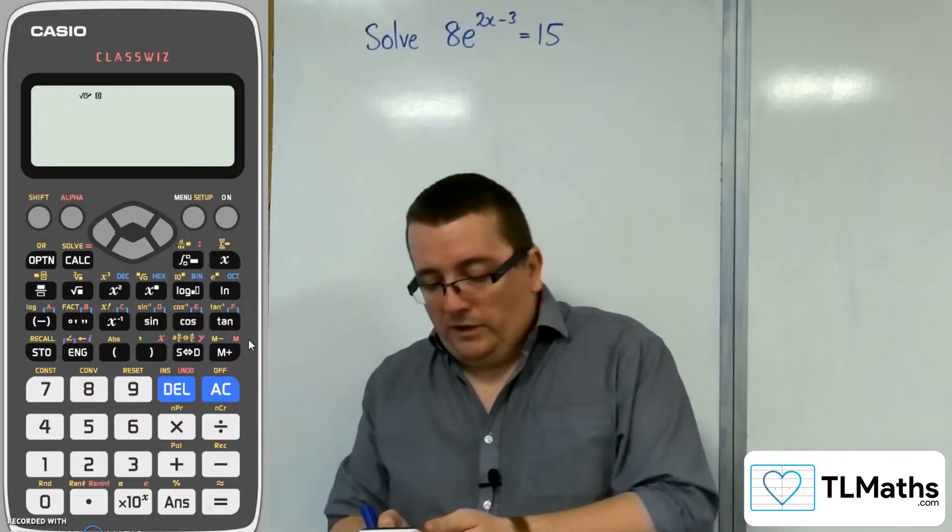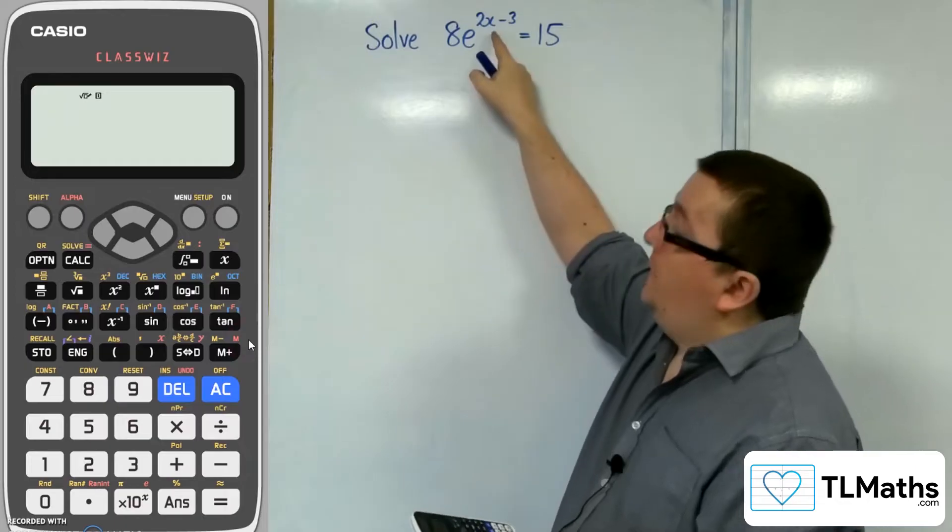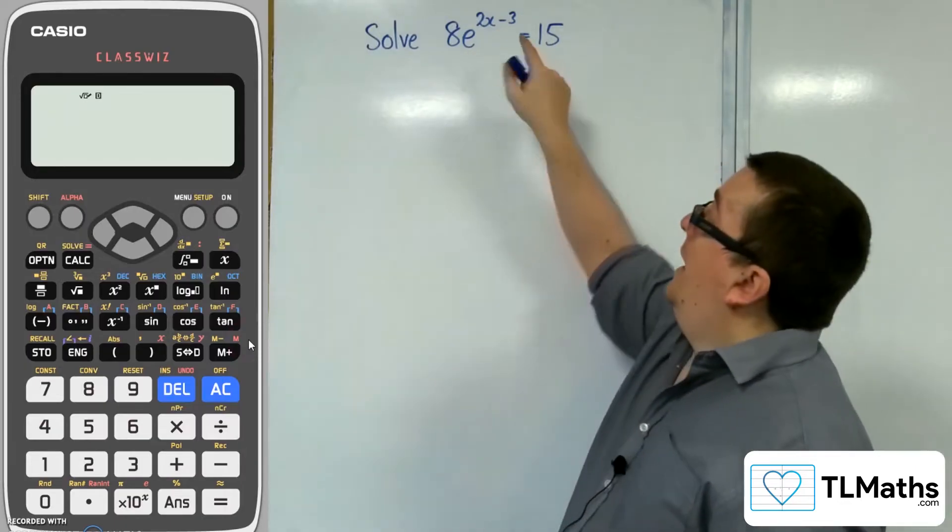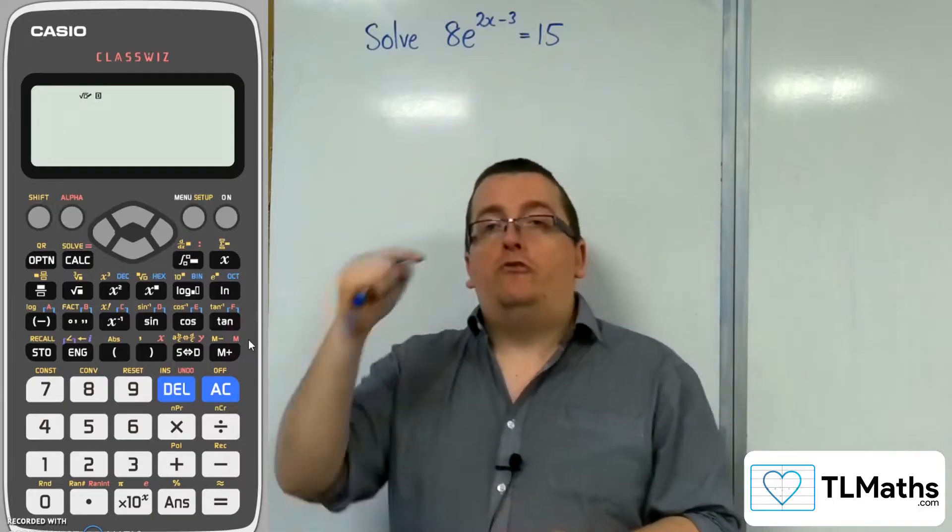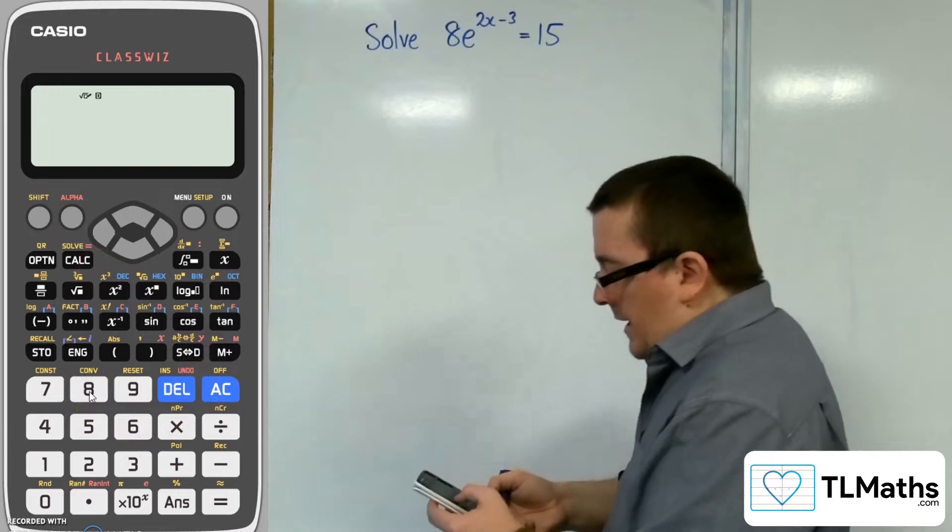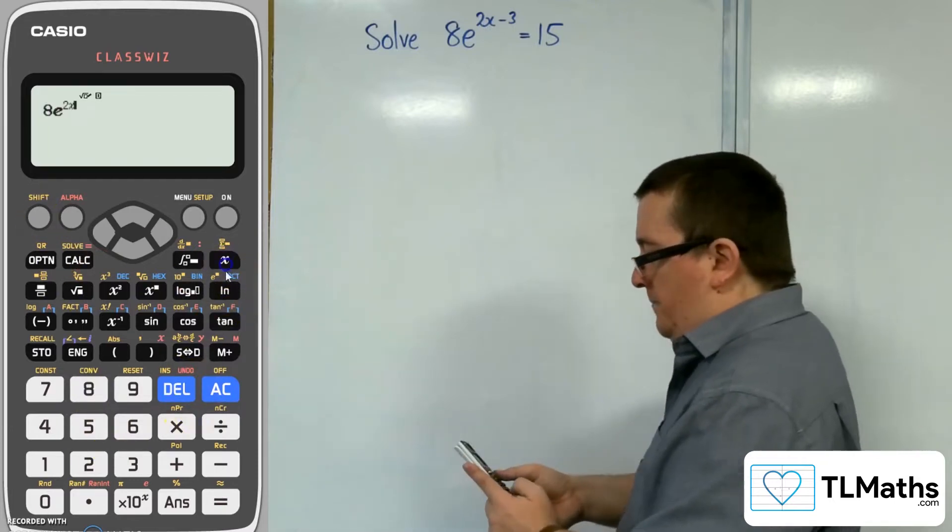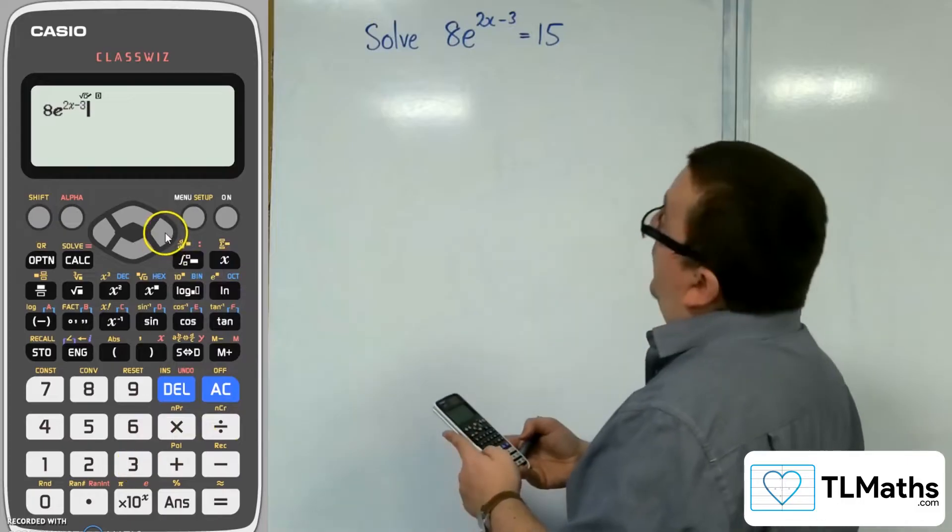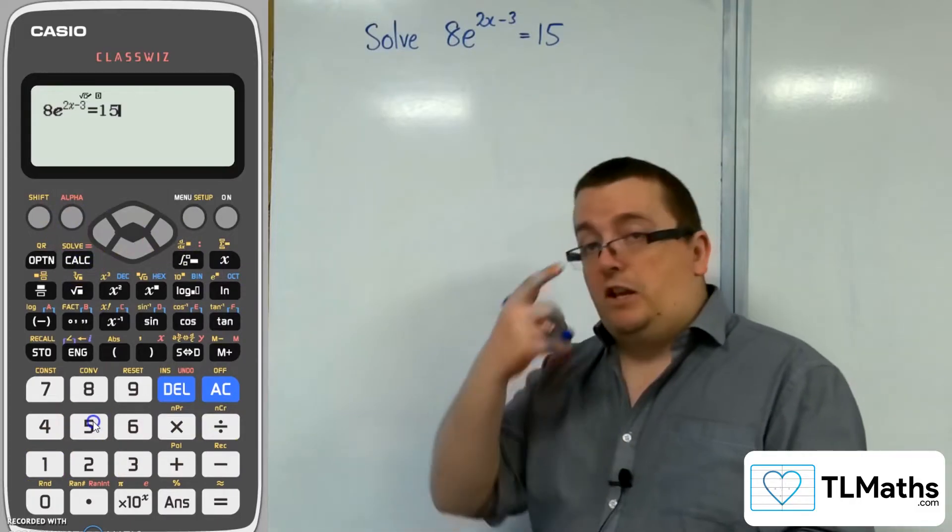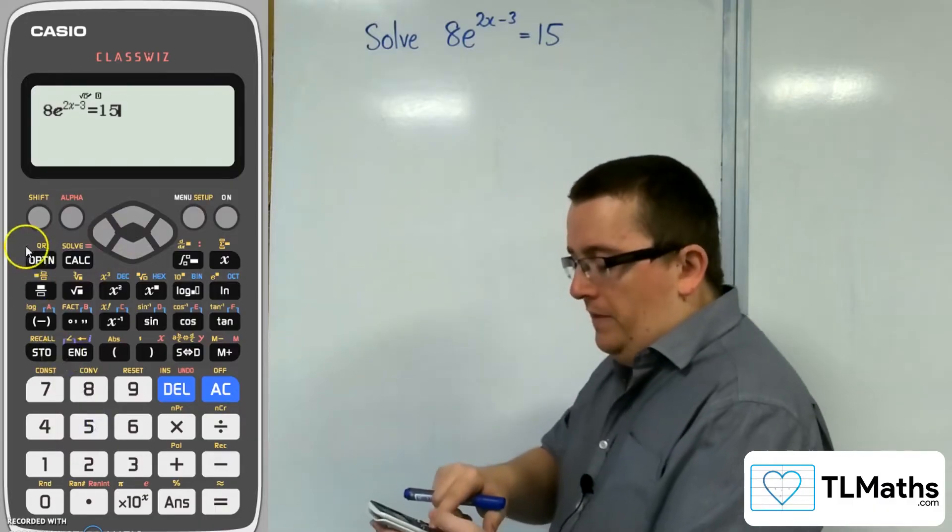So what we're going to do is type in this equation using the x button, which is in the top right-hand corner of the calculator. And for the equals, we're going to have to use the red equals sign. So I'm going to type in 8e^(2x-3), and then the red equals, and then 15. Now once you get there, you don't want to press the equals sign, otherwise you'll get an error message. You want to press shift, then solve.